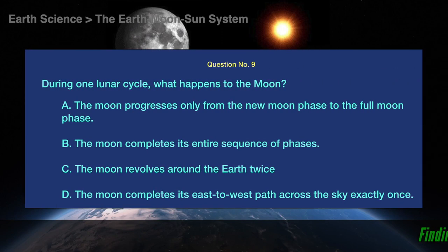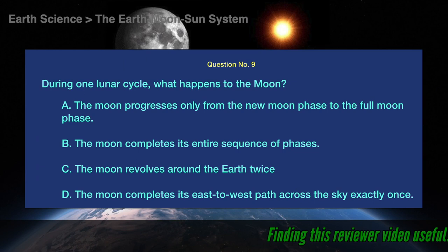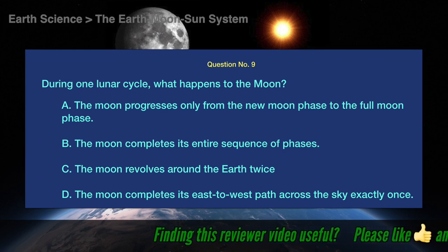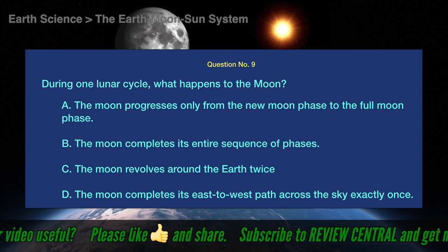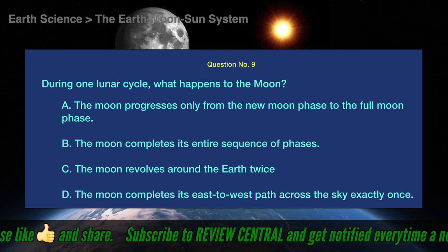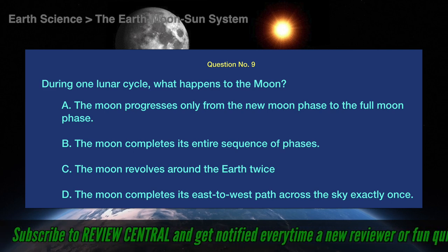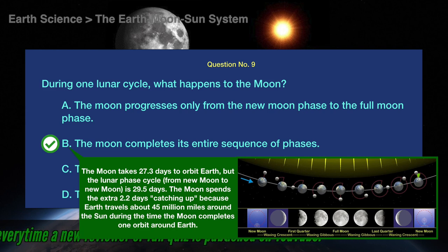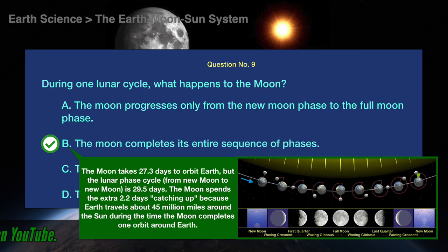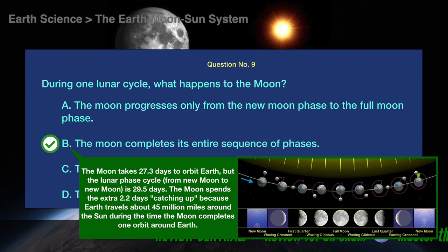Question number 9. During one lunar cycle, what happens to the Moon? A. The Moon progresses only from the New Moon phase to the Full Moon phase. B. The Moon completes its entire sequence of phases. C. The Moon revolves around the Earth twice. D. The Moon completes its East to West path across the sky exactly once. The correct answer is B. The Moon completes its entire sequence of phases. The Moon takes 27.3 days to orbit Earth, but the lunar phase cycle from New Moon to New Moon is 29.5 days. The Moon spends the extra 2.2 days catching up, because Earth travels about 45 million miles around the Sun during the time the Moon completes one orbit around Earth.